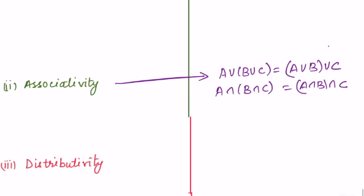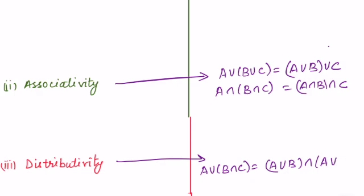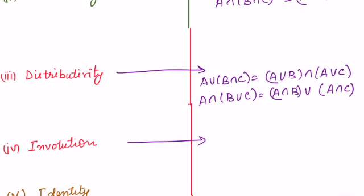Coming on to distributivity. Just like crisp sets, fuzzy sets follow the same distributivity property — that is, A union (B intersection C) equals (A union B) intersection (A union C). Next is identity: A union phi is equal to A, and A intersection X is equal to A.